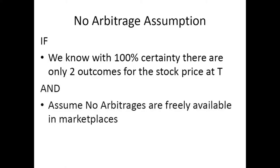One assumption we need to take into account is that there are no arbitrages freely available in the marketplace. If we know with 100% certainty that there are only two outcomes for the stock price at expiration, we can calculate the fair value for an option. This seems like a big assumption, but we're starting with a very simple one-step binomial tree that makes large assumptions. As we move along we'll make much more realistic assumptions, so don't worry if you find this questionable — hopefully by the end of class you'll see we've arrived at a reasonable real-world approach.